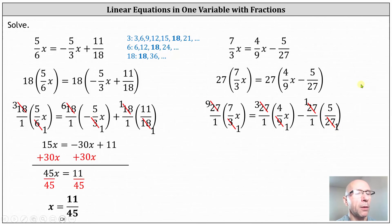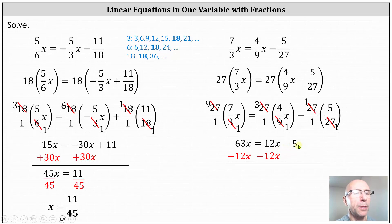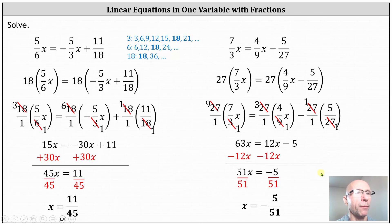And now we multiply. Going back to the left, we have 9 times 7x, which is 63x. Equals on the right, we have 3 times 4x, which is 12x, minus 1 times 5, giving us minus 5. For our next step, let's subtract 12x on both sides to get the x terms on the same side. Simplifying, we have 51x equals negative 5. For the last step, we divide both sides by 51, giving us x equals negative 5 fifty-firsts. I hope you found this helpful.